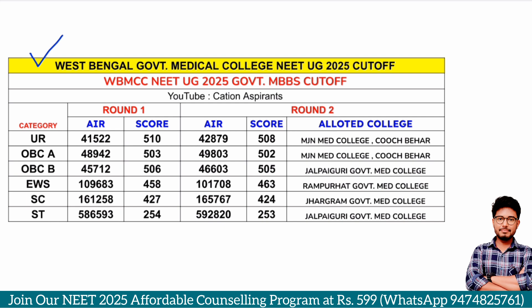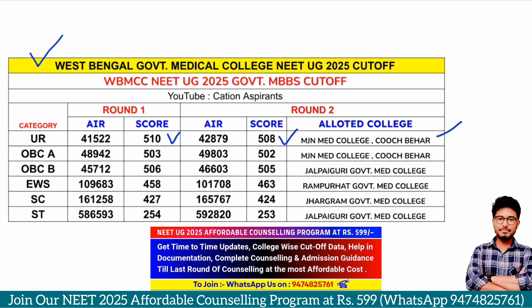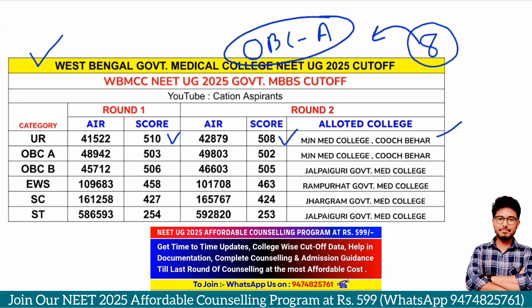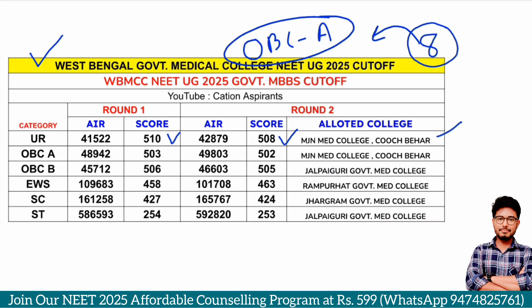First, for the general category cut-off: Round 1 is 510 marks, and Round 2 is 508 marks. The last allotted college from the Round 2 first allotment result is approximately in the general category as an OBC-A category candidate result.